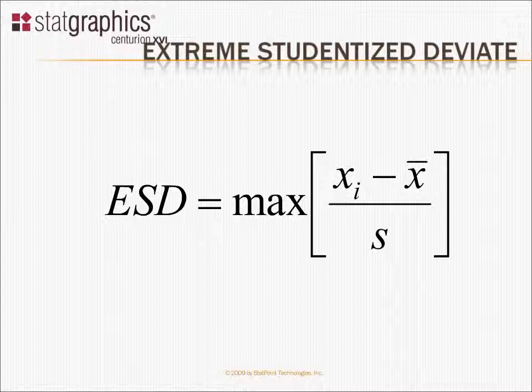We can actually do a formal statistical test if we think we see an outlier in our data set by computing something called the extreme studentized deviant. The way you calculate the extreme studentized deviant is you take each of your observations, your x sub i's, subtract the sample mean from each of the observations, and divide that deviation by the standard deviation s. The maximum absolute value of these standardized deviates would be called the extreme studentized deviant. As you'll see, StatGraphics can do a statistical test, Grubbs test, to determine whether the extreme studentized deviant represents a real outlier.